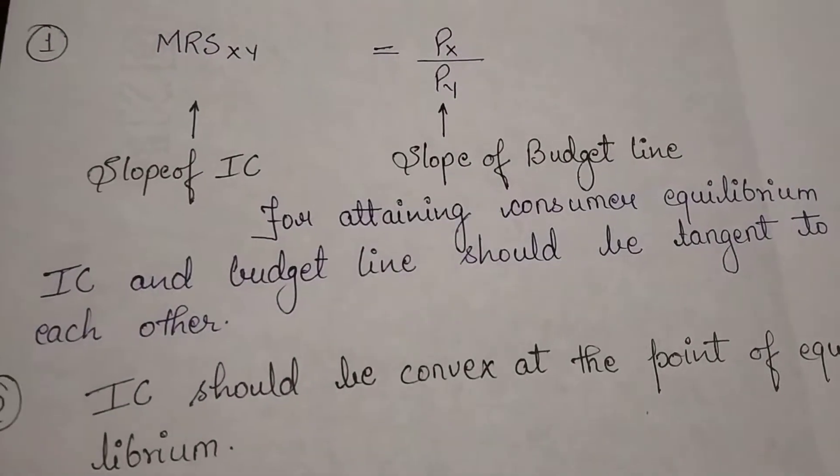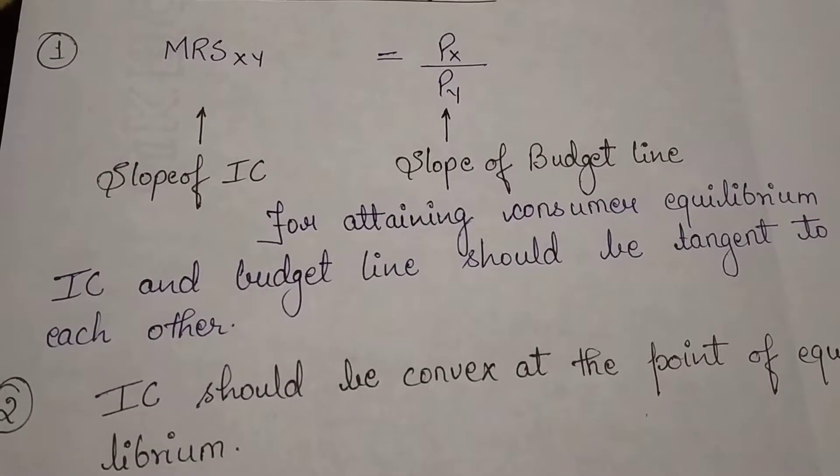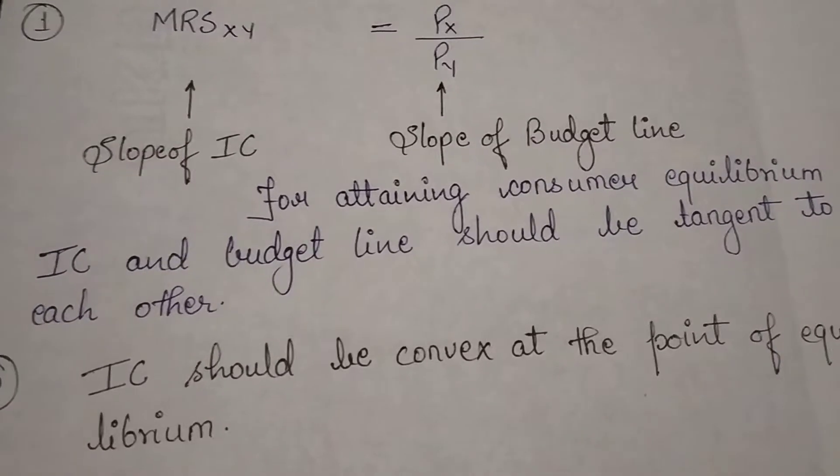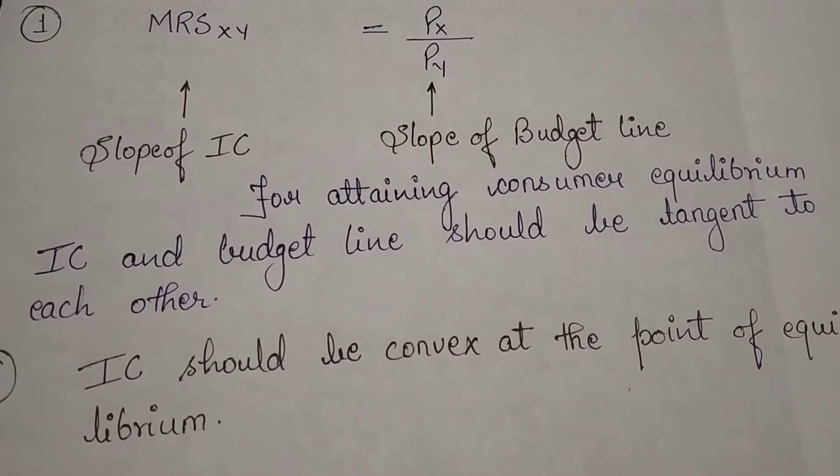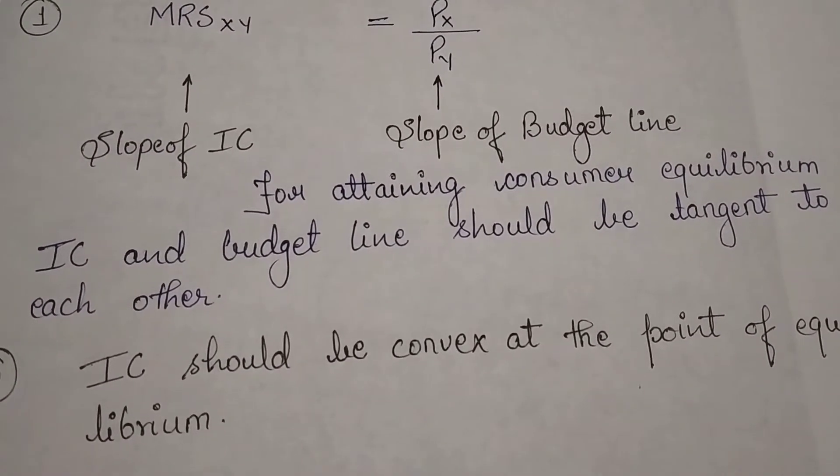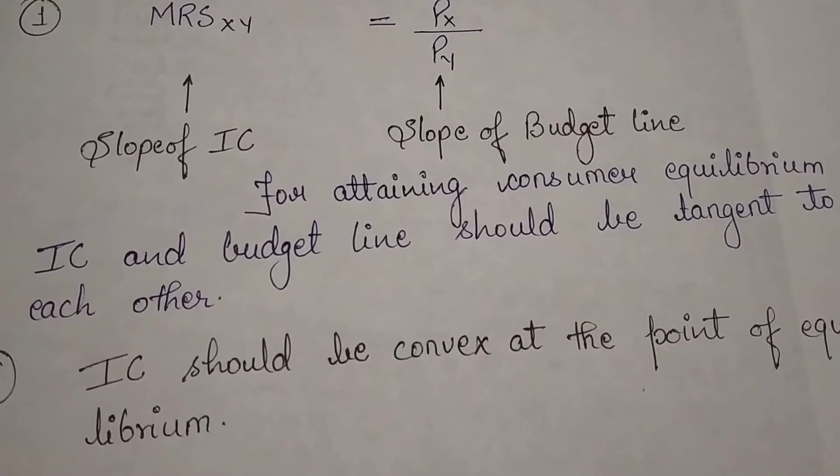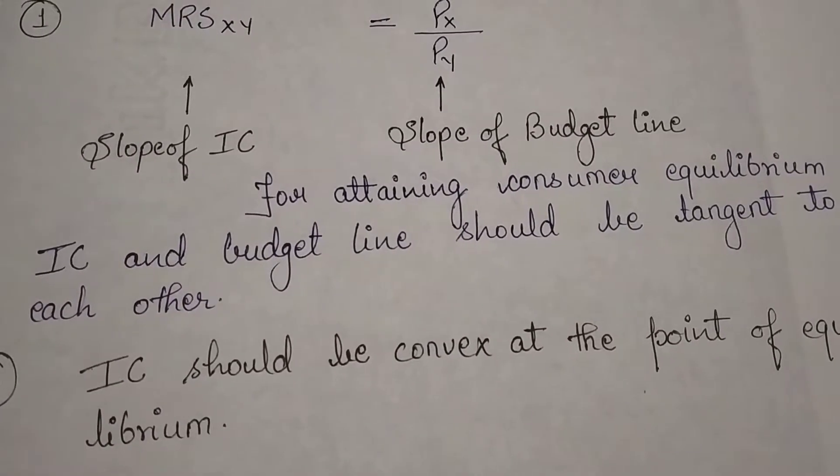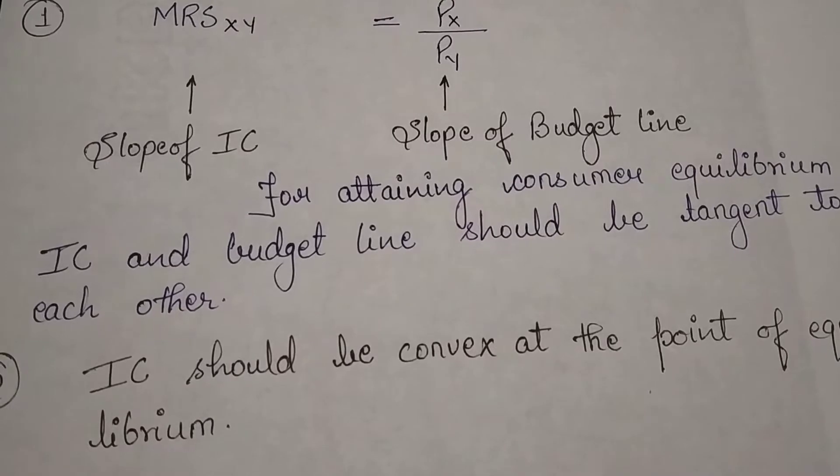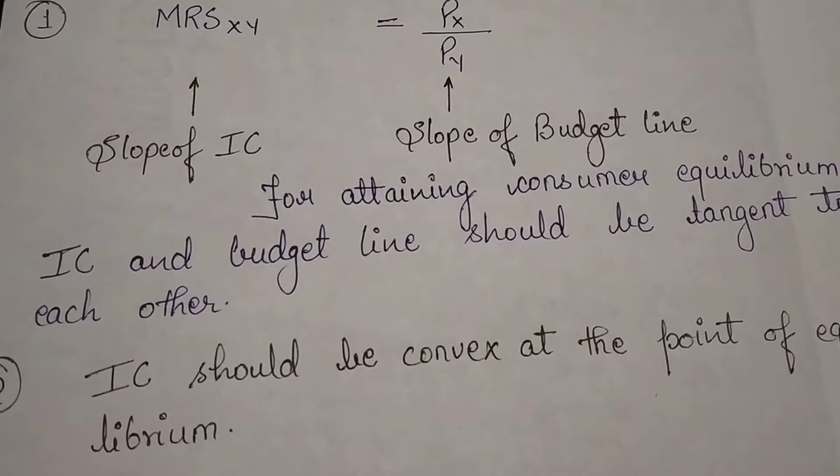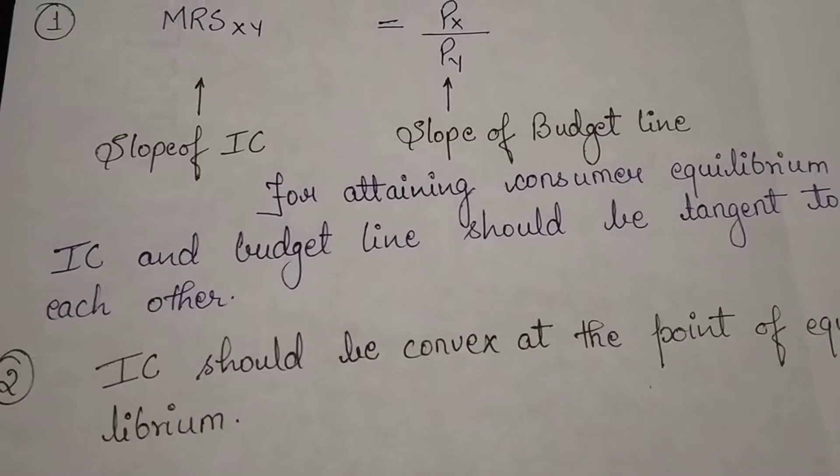For attaining consumer equilibrium, IC and budget line should be tangent to each other. So friends, our IC curve and budget line should be tangent to each other. If budget line and IC curve are not clear, I have a link in the description section, so go through it.